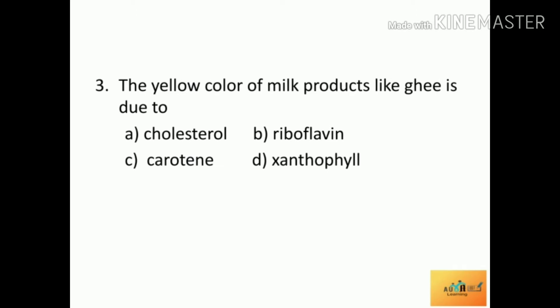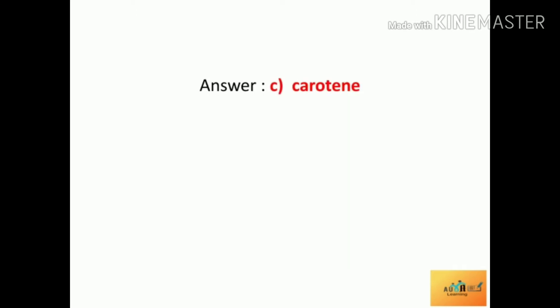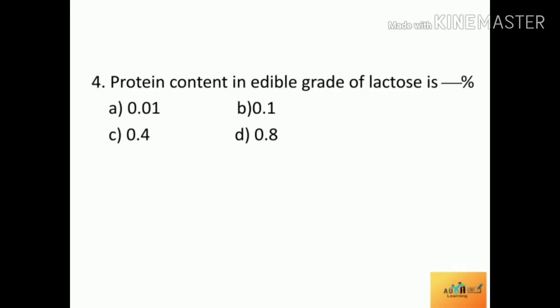Third question: The yellow color of milk products like ghee is due to — Option A: cholesterol, Option B: riboflavin, Option C: carotene, Option D: xanthophyll. The correct answer is carotene. Carotene gives the yellow color to milk products like ghee, butter, and cream.